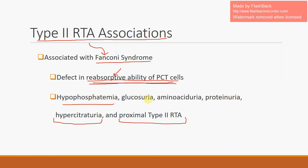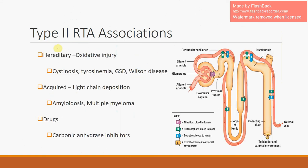In Fanconi syndrome, with loss of PCT reabsorptive capacity, citrate spills into the urine (hypercitraturia). Phosphate is also low in the blood because it cannot be reabsorbed — the same applies to glucose, amino acids, and proteins. The hallmark of Fanconi syndrome is the defect in the reabsorptive ability of proximal convoluted tubular cells. Type 2 RTA has several important associations, all tracing back to the central defect: inability to reabsorb bicarbonate at the PCT, causing non-anion gap metabolic acidosis.